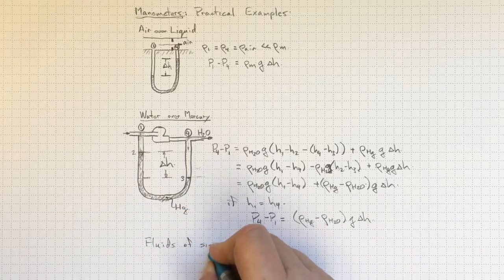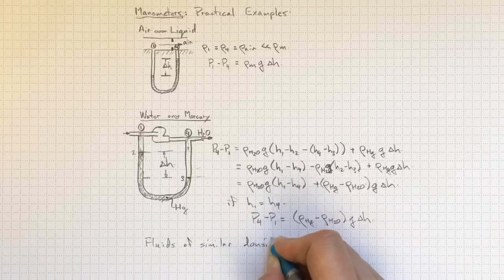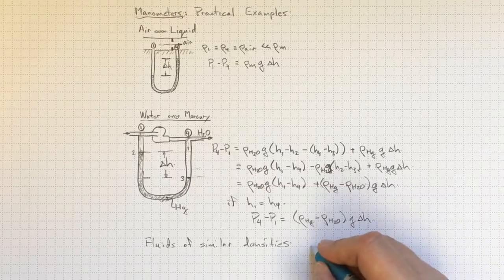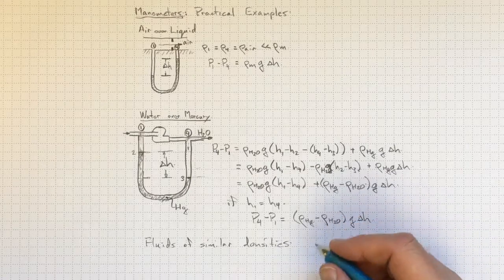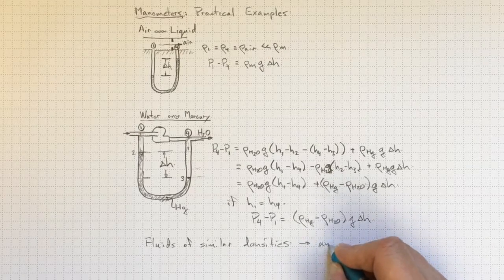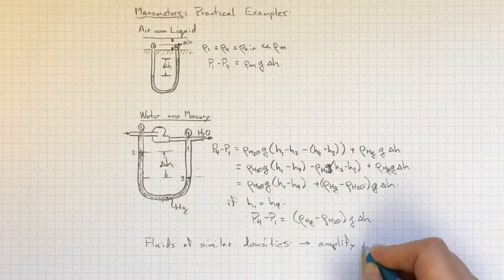So if we use fluids of similar densities, say a water and an oil, a thousand kilograms per cubic meter and 900 kilograms per cubic meter, those fluids of similar densities, they'll amplify the delta P.